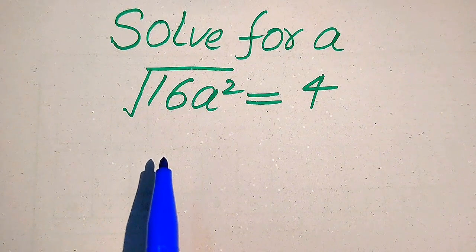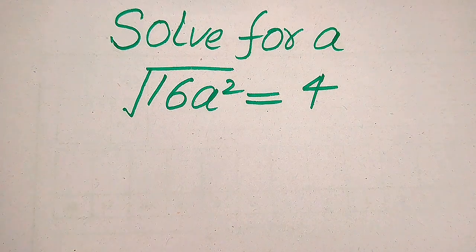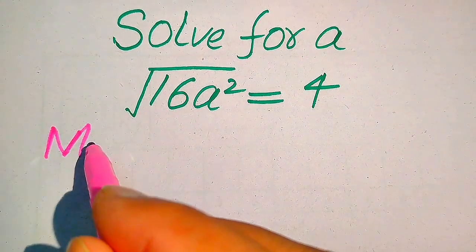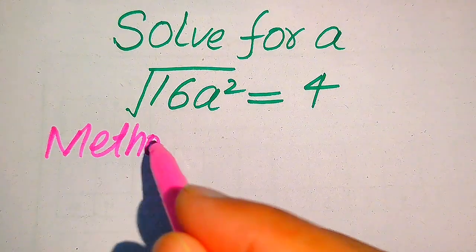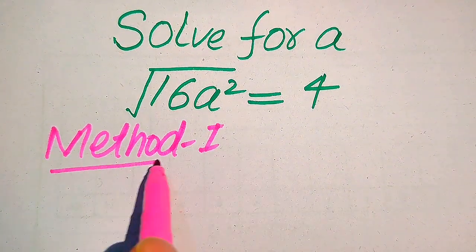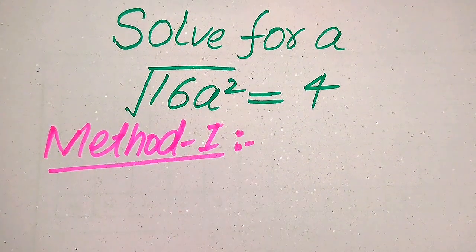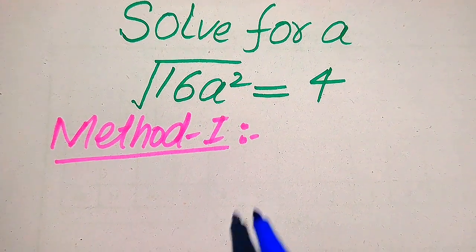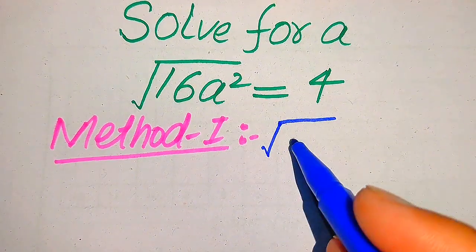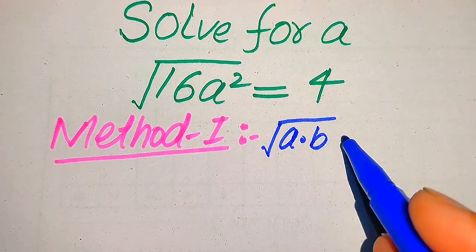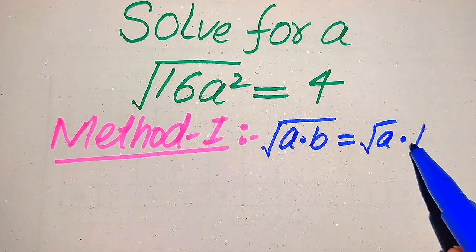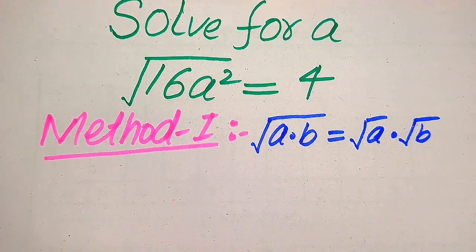We will solve this problem using two methods. I hope you like both of these methods, but if you have any other method in mind, please don't hesitate to write it in the comment section. Now we move towards our first method. In the first method, we use the radical law. You know that for the radical law, if we have the square root of a multiplied by b, we write it as square root of a multiplied by square root of b.